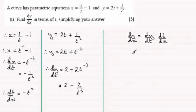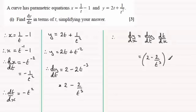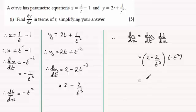Now substituting into the chain rule formula: dy by dx equals dy by dt multiplied by dt by dx, which is (2 minus 2 over t cubed) times (minus t squared). Multiplying out: 2 times minus t squared gives minus 2t squared, and minus 2 over t cubed times minus t squared gives positive 2 over t. So the simplified answer is 2 over t minus 2t squared.